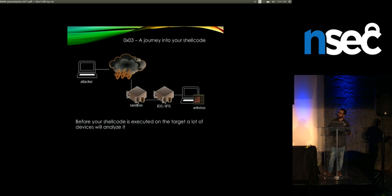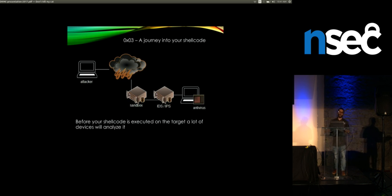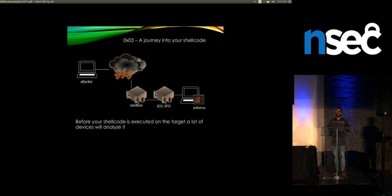This is a simple version of a company network. You're going to have the cloud, which is a terrible place full of malware and people trying to send malware into your environment. You try to avoid that by using IPS, sandboxes, and endpoint solutions. If you want to execute malware inside a corporate environment, you have to pass through all of these technologies.